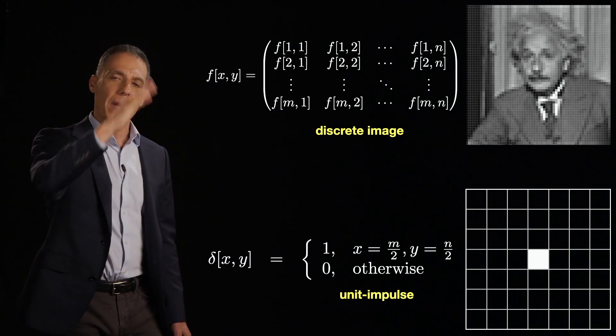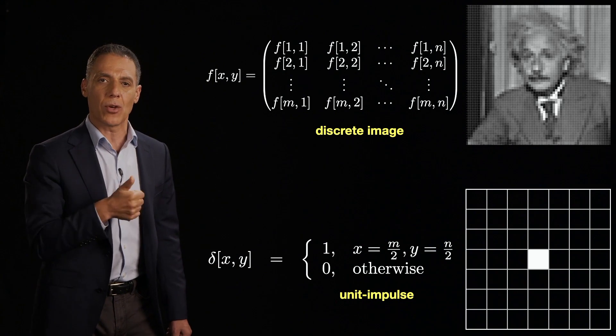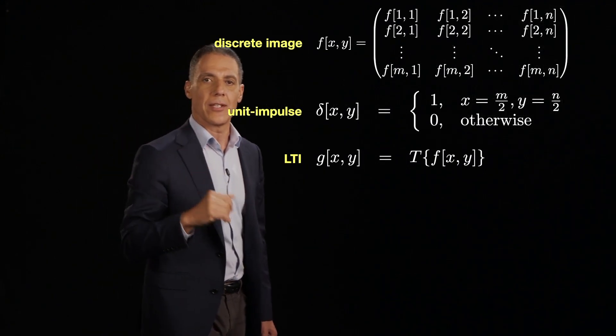So good. I've got a discrete time image, packed together a bunch of numbers into a matrix of values. I've got my 2D unit impulse, which is 1 at the center of the image and 0 everywhere else.